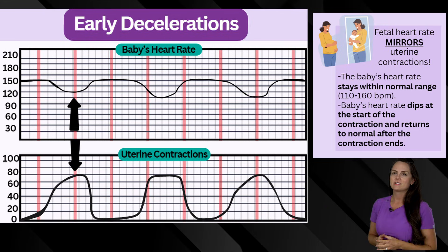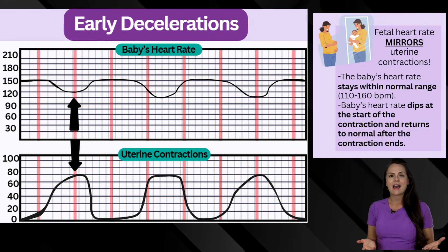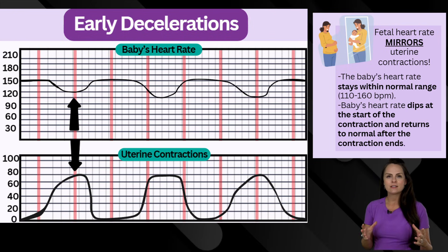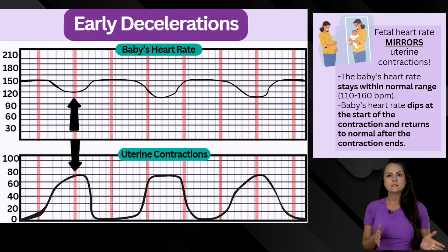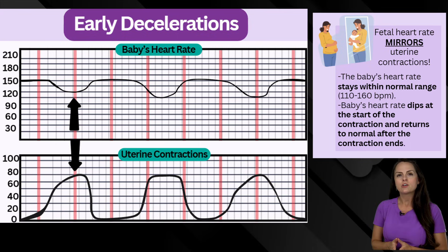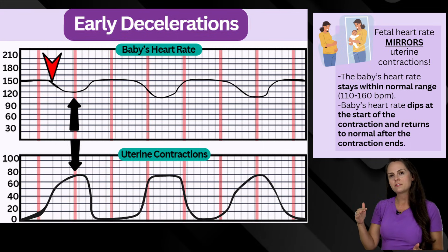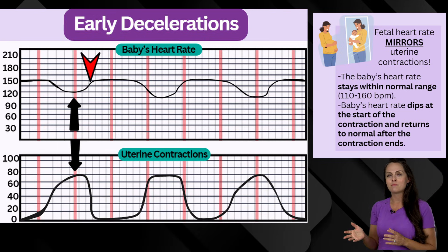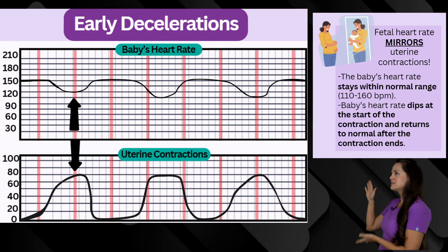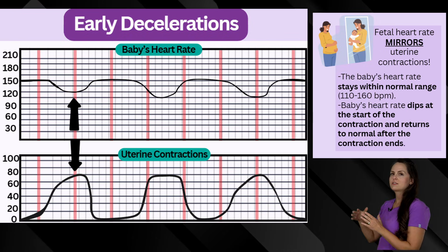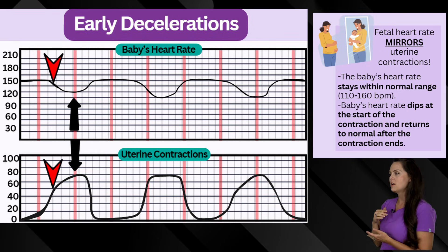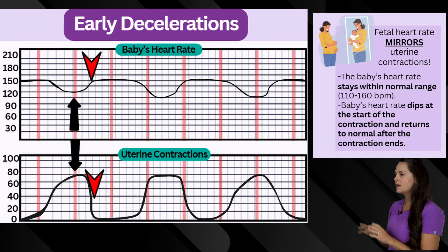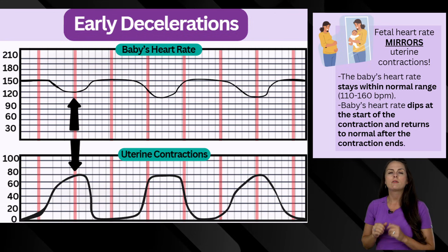Next are early decelerations. What you want to remember is that the fetal heart rate is going to mirror mom's contractions, and the baby's heart rate is going to stay within normal range from 110 to 160. You'll see that the baby's heart rate will dip at the start of mom's contractions but recover at the end. Here on this screen you can see baby's heart rate and mom's contraction literally mirroring each other — when mom's contraction starts, the baby's heart rate dips a little but stays within normal, and at the end of the contraction, the heart rate recovers nicely.